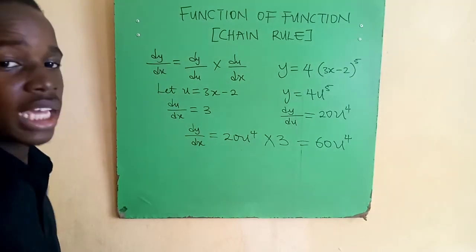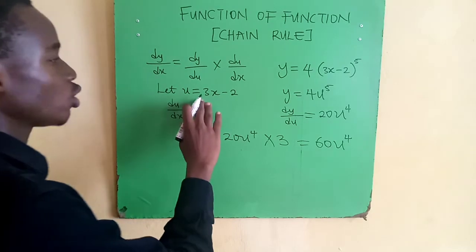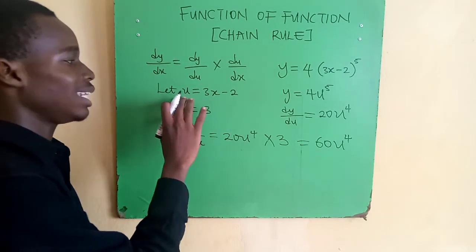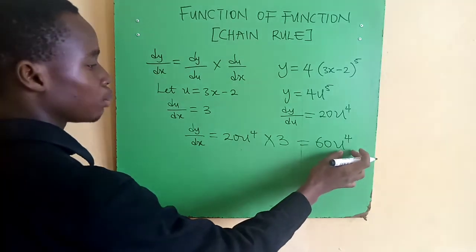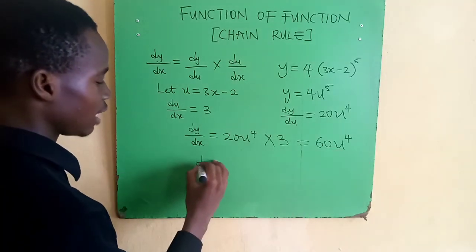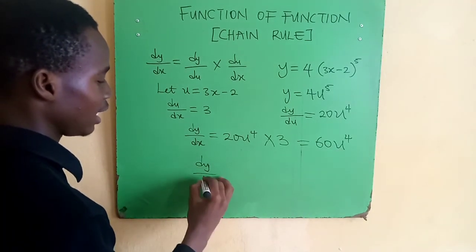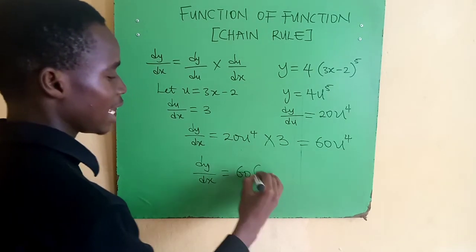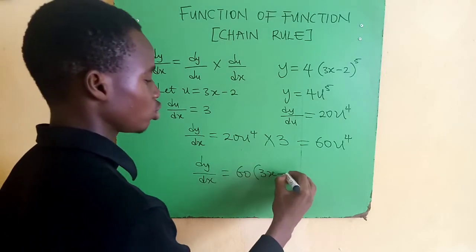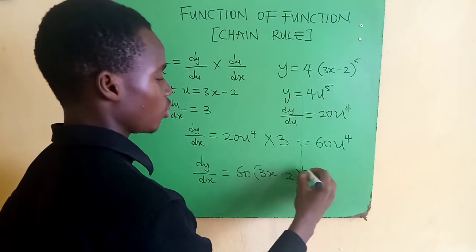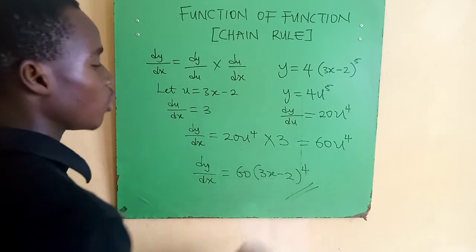Don't forget at the beginning we substituted and let u = 3x-2, so we'll bring that back in. Our derivative dy/dx = 60(3x-2)^4. And this is how we get the derivative of this function using chain rule or function of function.